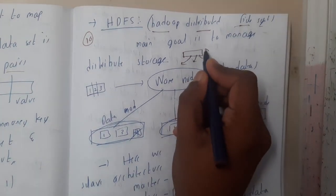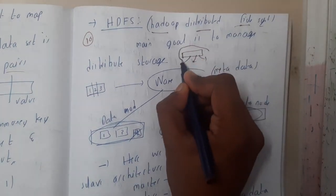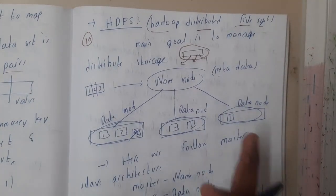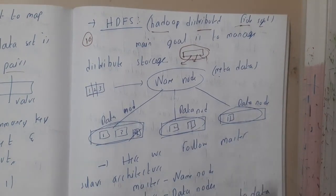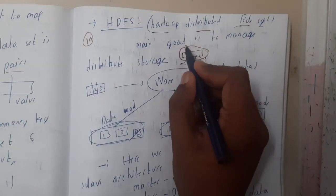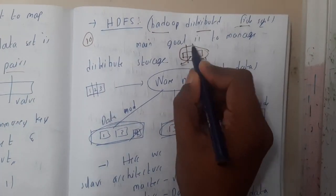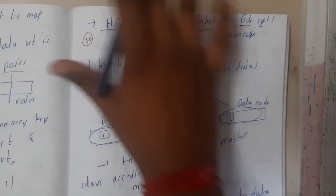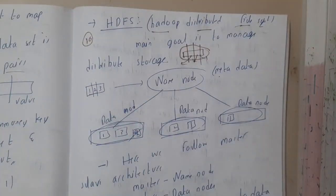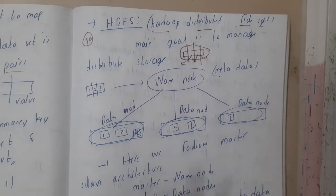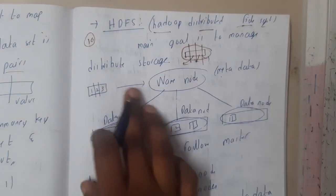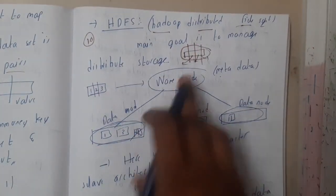That is the reason why you should replicate data into multiple servers and store it carefully. The first thing you will be doing is breaking this data into small chunks and storing it in multiple servers with multiple copies. The main goal is to manage the distributed storage.